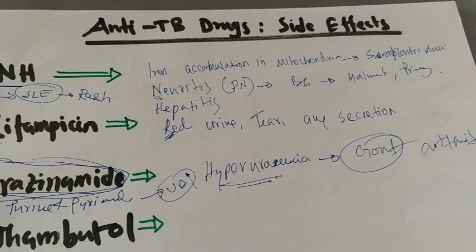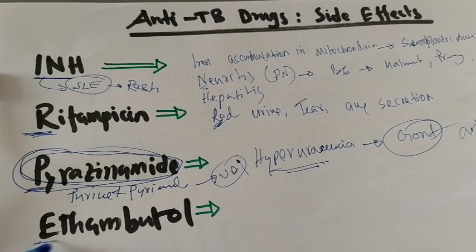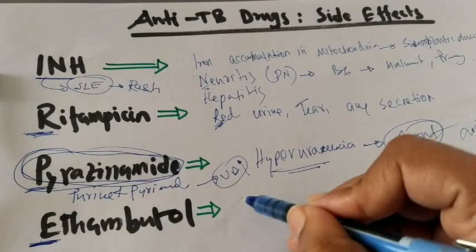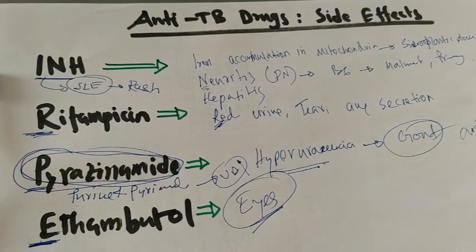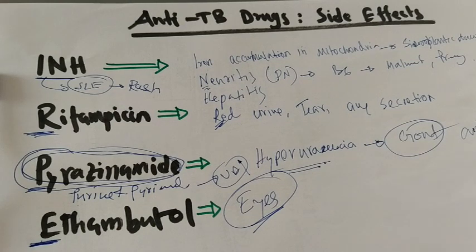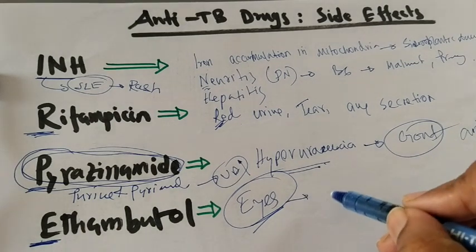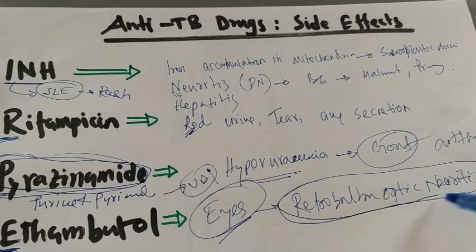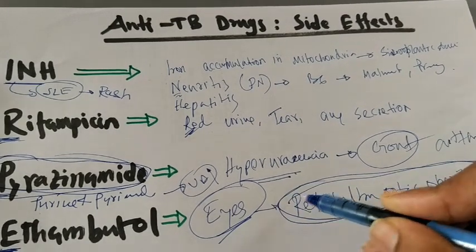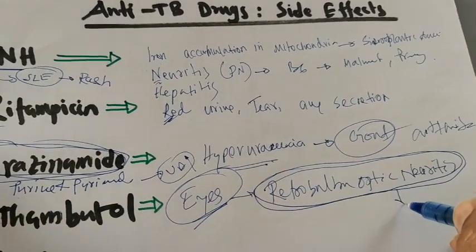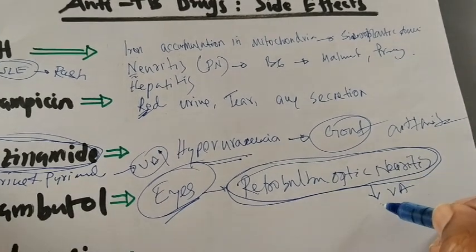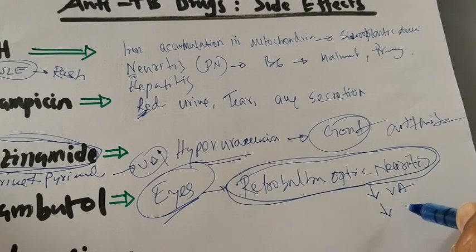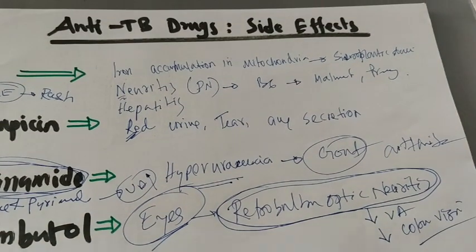Ethambutol — E for eyes. Ethambutol affects the eyes, causing Retrobulbar Neuritis. Retrobulbar Neuritis is the clinical/medical term. Patients develop reduced visual acuity and reduced color vision — specifically, loss of discrimination between green and red. This can be problematic; for example, a driver may not be able to distinguish red and green traffic signals.